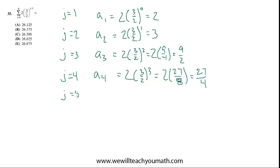And then j equals five. We're finding a five. This is the last one we have to do. Two times three halves to the fourth power, which is two times 81 over 16, which turns out to be 81 over eight.